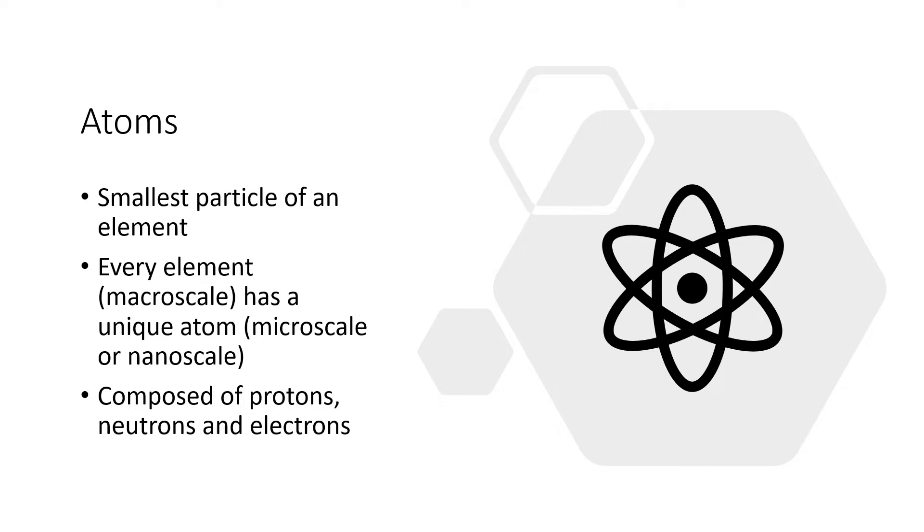And then one last little bit at this point about atoms. Atoms are actually composed of smaller bits that are called protons, neutrons, and electrons.